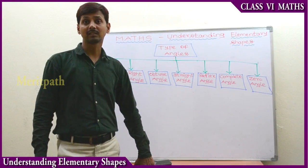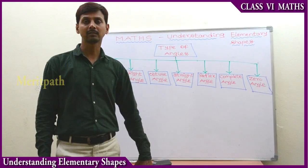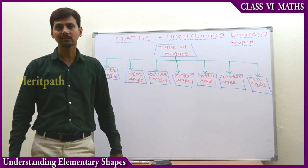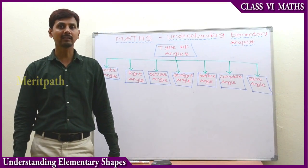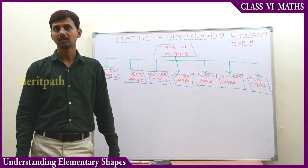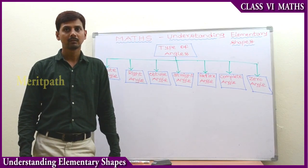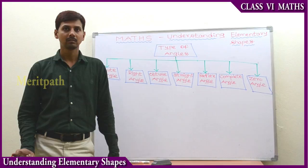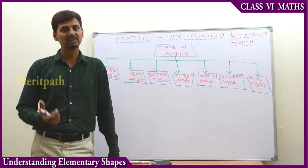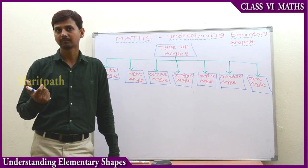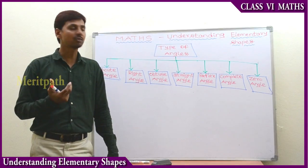So let us discuss the types of angles. We have different types of angles: acute angle, right angle, obtuse angle, straight angle, reflex angle, complete angle, and zero angle.